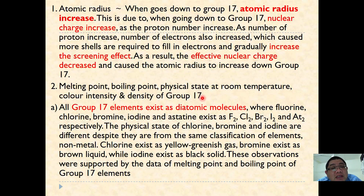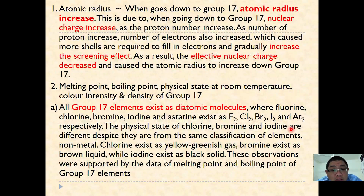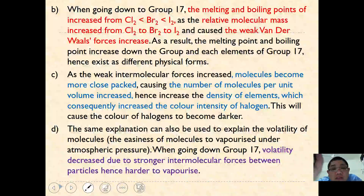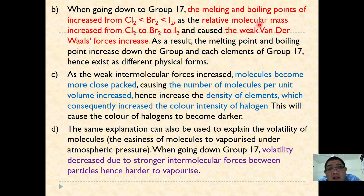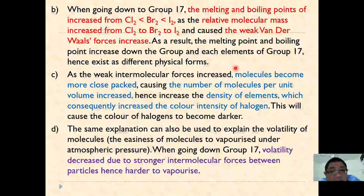All group 17 elements exist as diatomic molecules: fluorine as F₂, chlorine as Cl₂, bromine as Br₂, iodine as I₂, and astatine as At₂. They have very different physical states due to the different intermolecular forces between them. Going down group 17, melting point and boiling point increase from chlorine to bromine to iodine, as the relative molecular mass increases and the weak van der Waals forces between them increase.